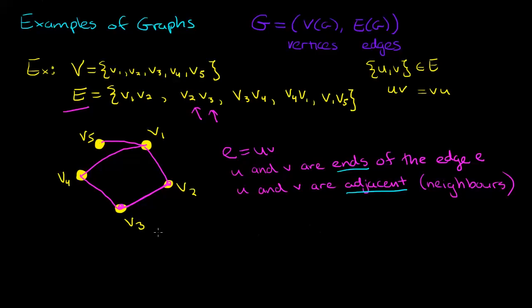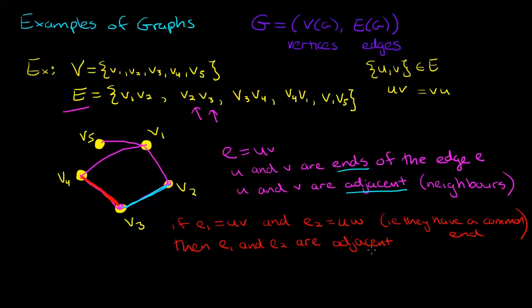We also have the concept of an edge being adjacent to another edge. Let me draw here in blue this edge which goes from V2 to V3, and in red V3 and V4. We can see that these two edges, V2 to V3 and V3 to V4, have a common end. So if an edge and another edge have a common end, then those edges are adjacent. We can use the word adjacent also in terms of edges being adjacent.